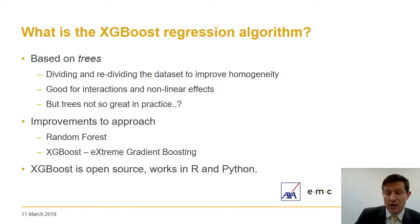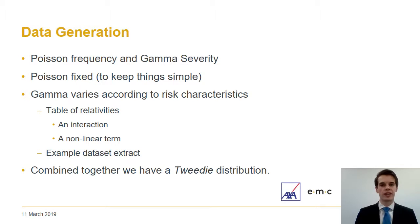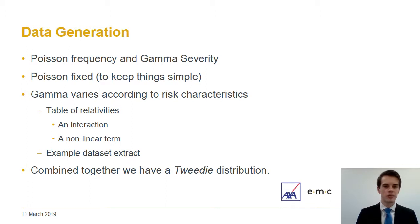XGBoost is open source; we've been running it in R but you can also run it in Python. For this demonstration we're going to generate insurance-like loss data using a Poisson frequency and a gamma severity approach. Combining these models gives us a total loss cost which we're going to model. We're keeping the Poisson parameter fixed at 1.2 to keep things simple, and it is the gamma severity that we vary according to our defined input data.